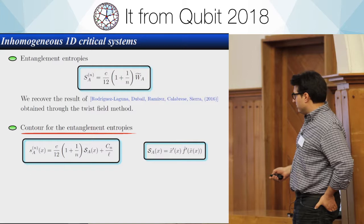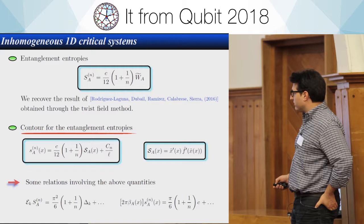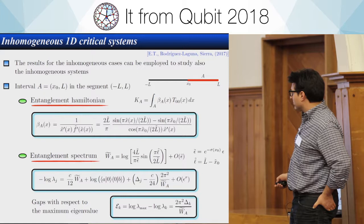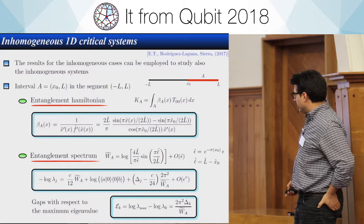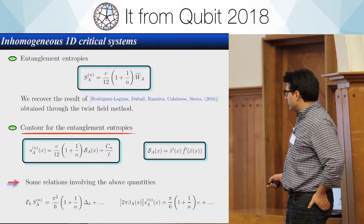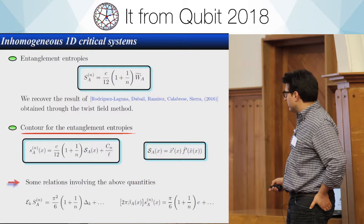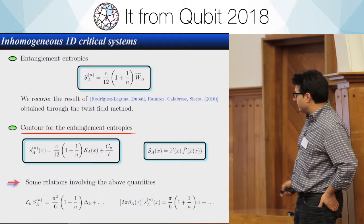We observe interesting relations: the first gap between entanglement spectrum eigenvalues, and a relation between the entanglement temperature and the contour function. Their product gives a result in terms of c, the central charge. Here X is the position inside the interval, and these are CFT-derived relations — so the entanglement temperature times the contour function gives a quantity proportional to c with no X dependence.